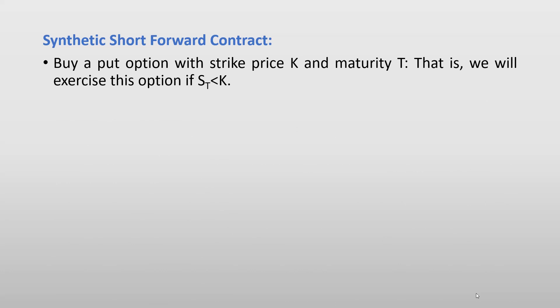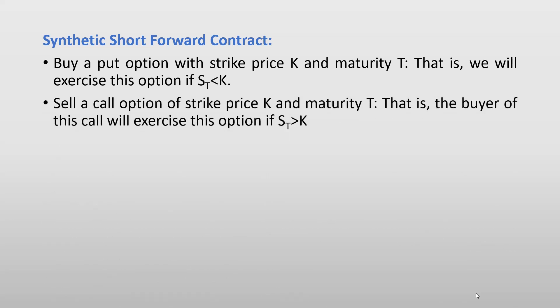To construct a synthetic short forward contract — this is completely the opposite of the long synthetic forward. In this case we buy a put option with strike price K and maturity T, exercising it if S_T is less than K, and we sell a call option with the same strike price K and maturity T, where the buyer will exercise if S_T is greater than K. In either case we are effectively selling the stock regardless of price direction.